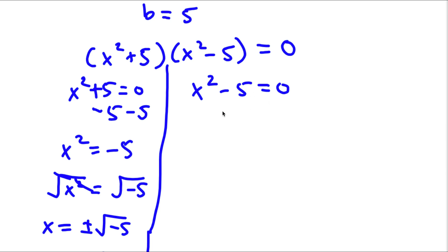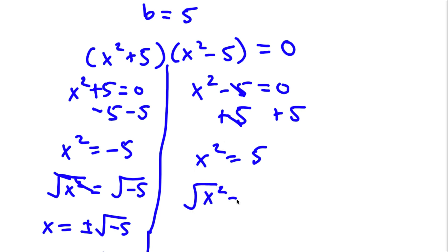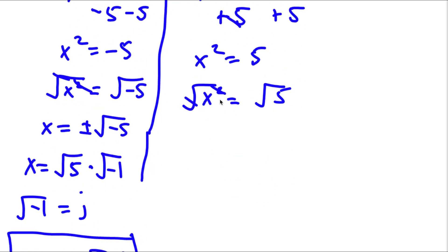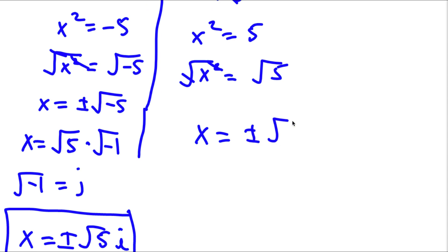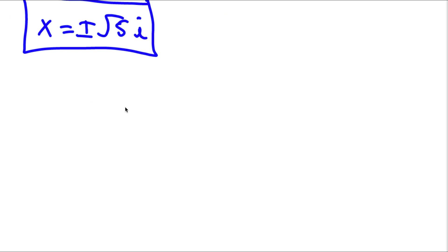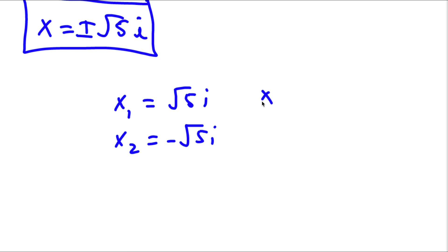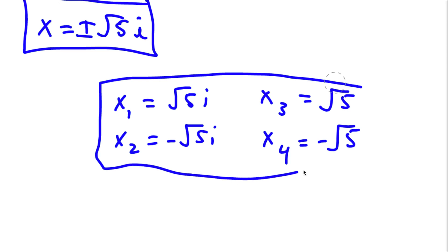Now for x squared minus 5 equals 0, I can simply add 5 on both sides. These two cancel out, and I will have x squared is equal to 5. Now I can take the square root on both sides. These two cancel out, and I will be left with x is equal to plus or minus the square root of 5. So my four solutions to this problem are the square root of 5 times i, negative square root of 5 times i, the square root of 5, and negative square root of 5. So these are my four solutions to this problem.